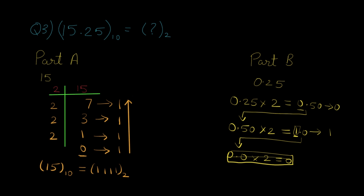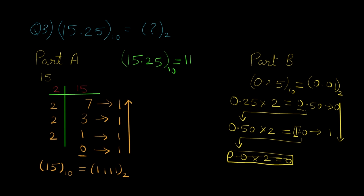After ignoring that value we get 0.00 for the next iteration. Since 0 × 2 = 0, we stop the process. The answer for Part B is in ascending order: 0.01. So 0.25 in decimal is equal to 0.01 in binary. Now we club Part A and Part B together to get the final answer: 15.25 in decimal is equal to 1111.01 in binary.